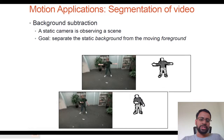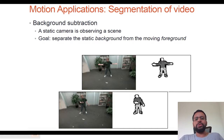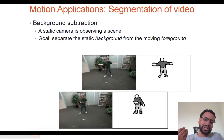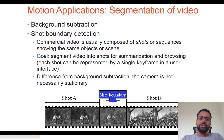What could be the applications of motion estimation? One of them is background subtraction. For example, you might be recording a video and you want to change the background — you would look at the emotions in the face or hands, figure out what the background is that is static, and then replace it with something else. That's one possible application.